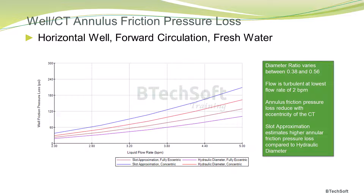Also note that for this example, the slot flow approximation estimates a higher annular friction pressure loss compared to the hydraulic diameter for both concentric and eccentric cases.